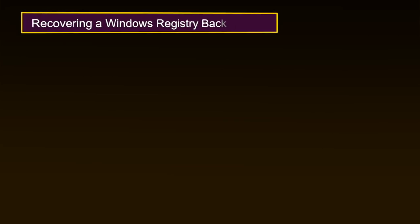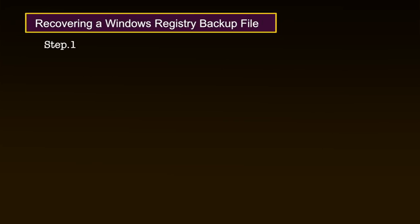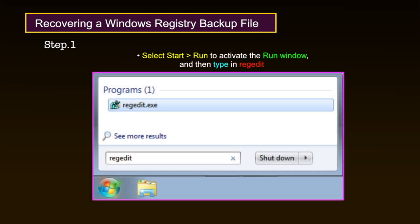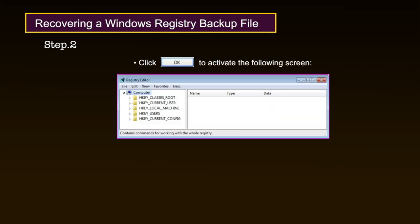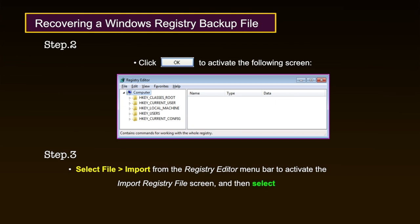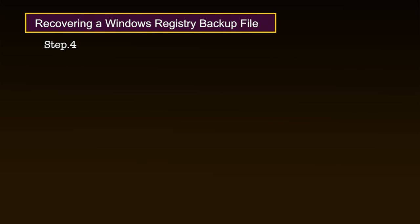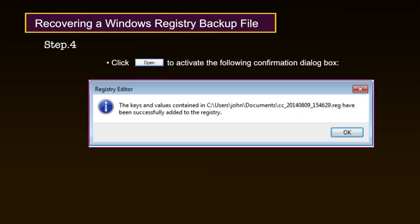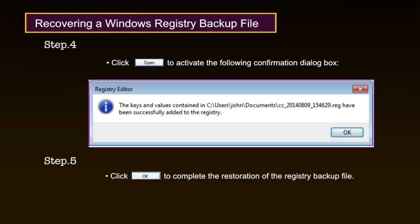Now let us see how to recover a Windows Registry backup file. If you suspect that cleaning the Windows Registry has caused a problem with your system, the registry backup file you created can be used to restore the original registry. Step 1: Select Start > Run to activate the Run window, then type 'Regedit'. Step 2: Click OK. Step 3: Select File > Import from the Registry Editor menu bar to activate the Import Registry File screen, then select the file. Step 4: Click Open to activate the confirmation dialog box. Step 5: Click OK to complete the restoration of the registry backup file.